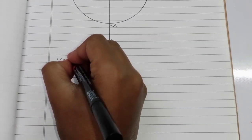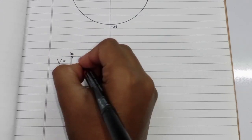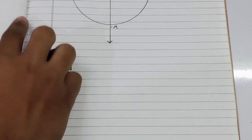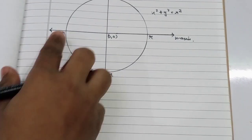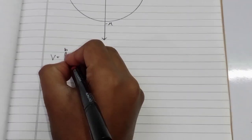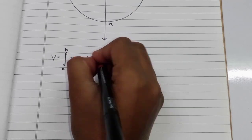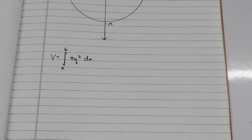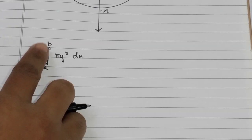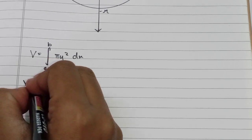V equals the integral from a to b. Since we are doing the revolution about the x-axis, it will be V = π ∫ y² dx. Now let's figure out the upper and lower limits.